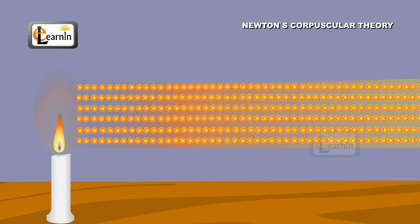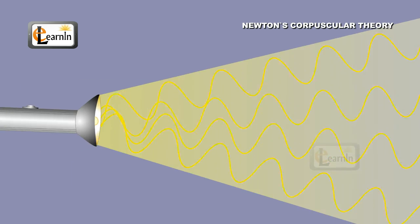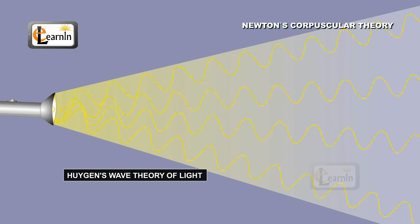This is why the theory was later abandoned in favor of Huygens' wave theory of light, which proved that the light travels in the form of waves.